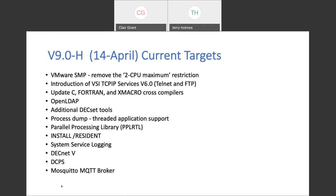Targets for April 14th: we will be shipping on that date — the train leaves, you're either on it or you're not. We've lifted the restriction on VMware SMP to two CPUs. The new version of TCP/IP services will come in the April release. We know we'll have updates to C, Fortran, and Macro, and there may be others in the cross tools. OpenLDAP is in the works, and at least one or two more DECSET tools will become part of that package.